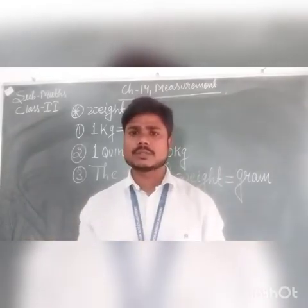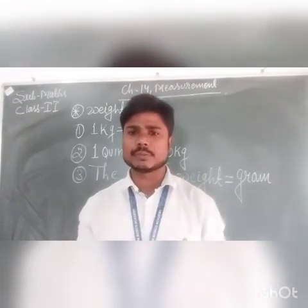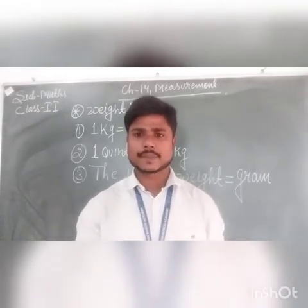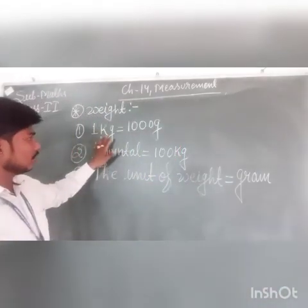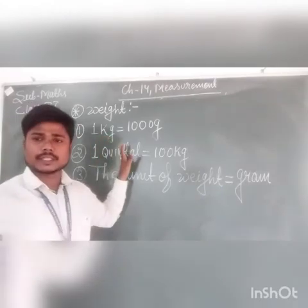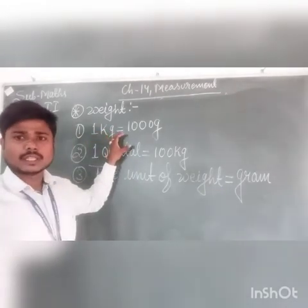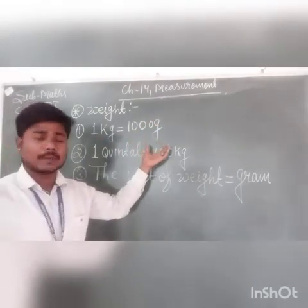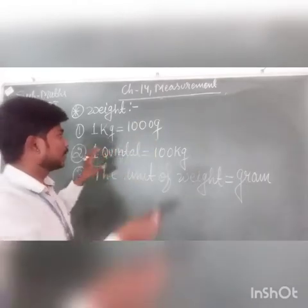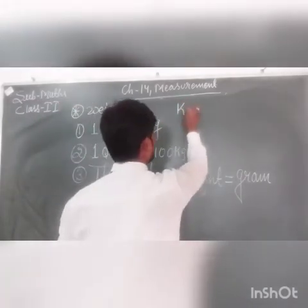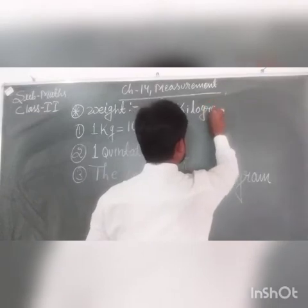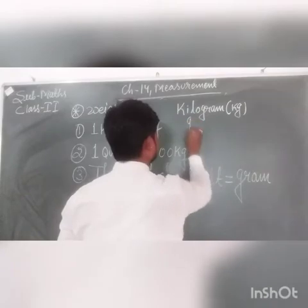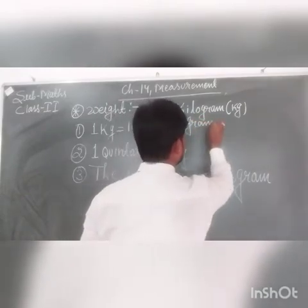Some other units are also there that can be used to measure the weight of any substance or things. Now look here — I have written 1 kg. Kg means kilogram, and g means gram. Kg is the short form of kilogram and g is the short form of gram. Kilogram can be written as kg, and gram can be written as g.